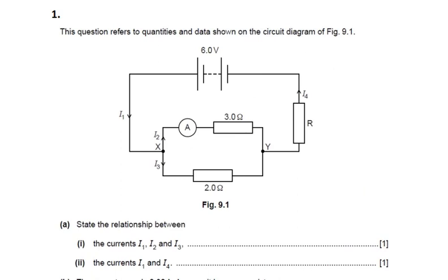Let's go back to the diagram for a better view. The first thing to note is what kind of circuit this is — parallel or series? It's obvious that this circuit comprises both series and parallel. You can see the two resistors: the 3-ohm resistor and the 2-ohm resistor are connected in parallel, and their equivalent resistance is in series with the other resistor R.